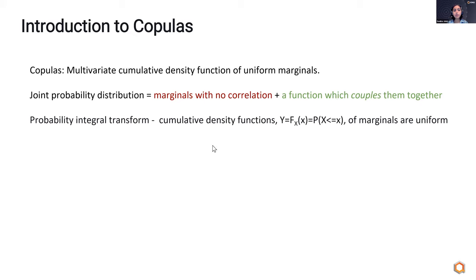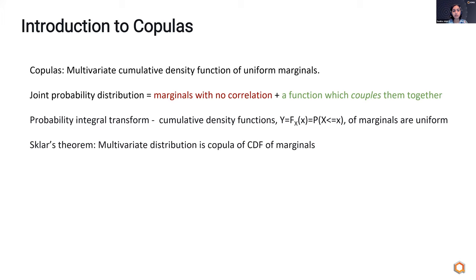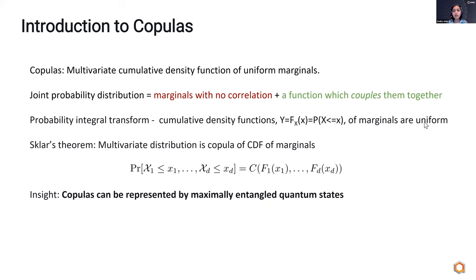This is based on the probability integral transform, which states that the CDF of a random variable is itself a random variable that is uniformly distributed. And then there's Sklar's theorem, which says that any multivariate distribution can be written as a copula of the CDF of the marginals. Our main insight in this paper was that these copula functions — which are very fundamental to probability theory and statistics — can actually be exactly represented by a maximally entangled quantum state.